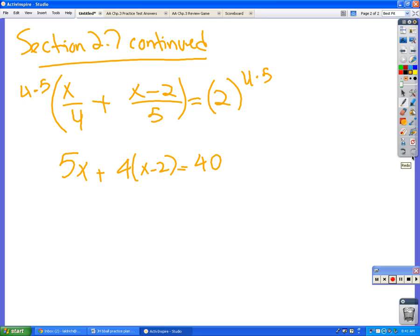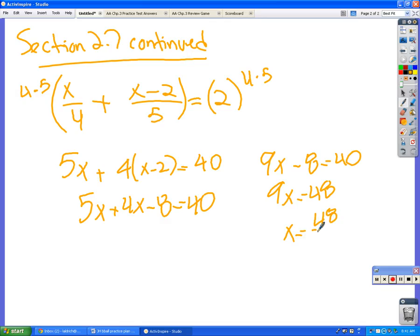All right, this was supposed to be the easy algebra. So 5x plus 4x minus 8 equals 40. So 9x minus 8 equals 40. And then 9x equals 48, because you add 8 over there. So x equals 48 divided by 9, whatever that is.